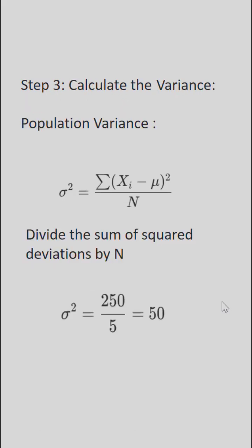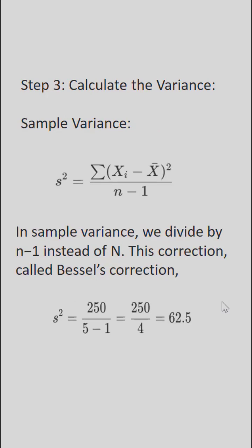Step three is to calculate the variance. First, we calculate population variance. Take the sum of squared differences, 250, and divide by the sample size, 5. 250 divided by 5 is 50. This is called population variance.